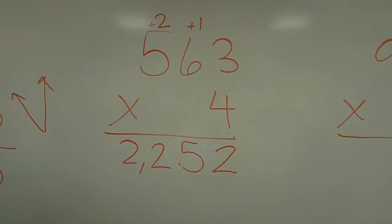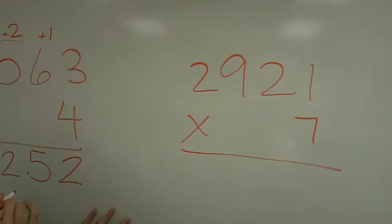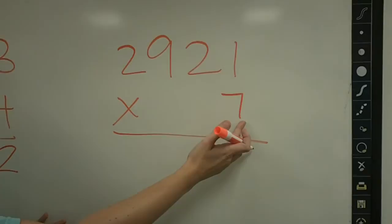So now, if we do 3 digit, well, we could do a 4 digit. So let's put another number in front here. Because you're going to continue the same process, no matter how many digits are on top. If there's one digit on bottom, you just keep regrouping to the end.